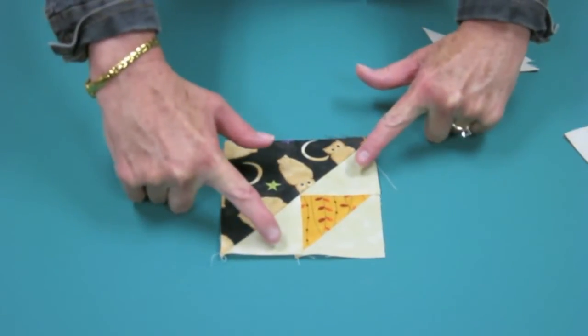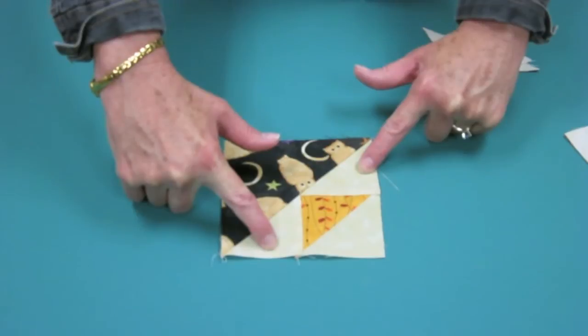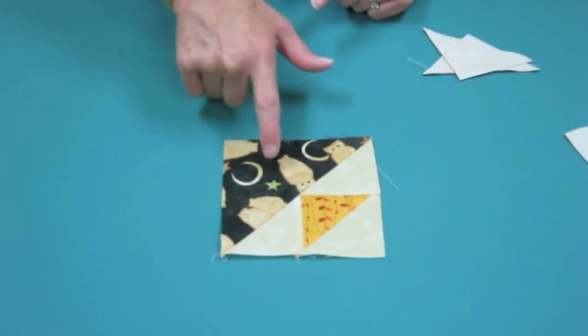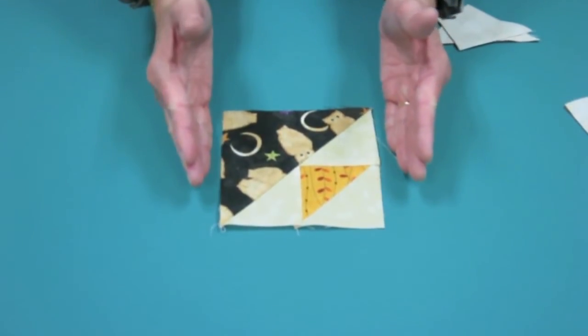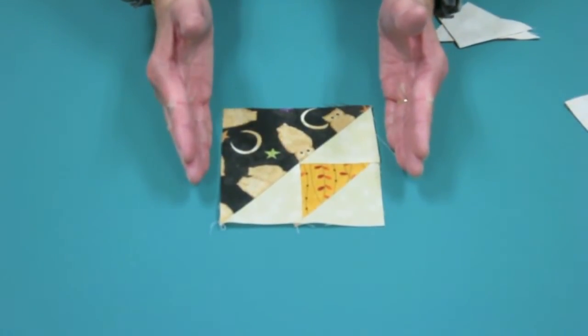I have pressed my seam allowances to my light triangles here, which is what we don't typically do, but it's what it wants to do. And then on this one, I am pressing towards the dark. This square right here should measure five inches when I get done.